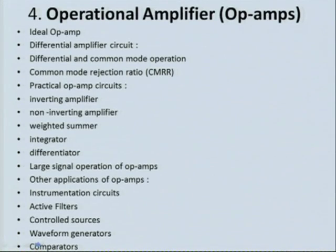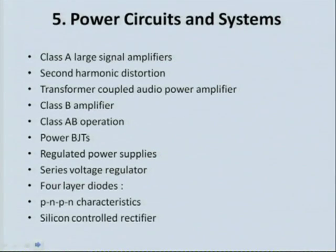We will also discuss control sources and waveform generators using op amps. Lastly, we will discuss power circuits and systems — like power BJTs used in power circuits — and also different types of large signal amplifiers like class A, class B, and class AB type operation of power amplifiers. And we will discuss a special type of diode known as the PNPN diode or four-layer diode. The basics of this PNPN diode will be discussed, and then the silicon controlled rectifier — SCR — will be discussed under this topic.